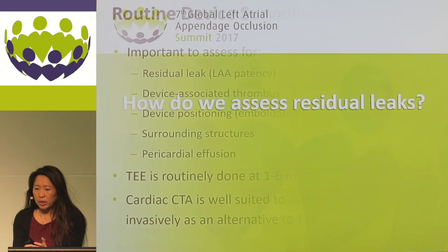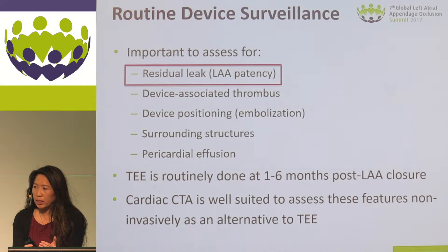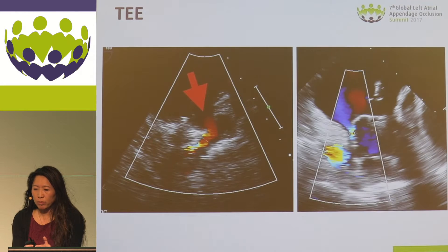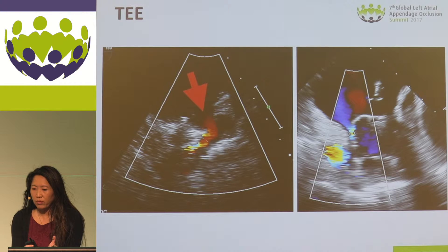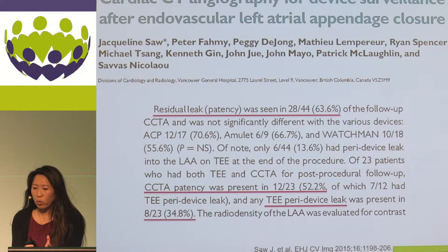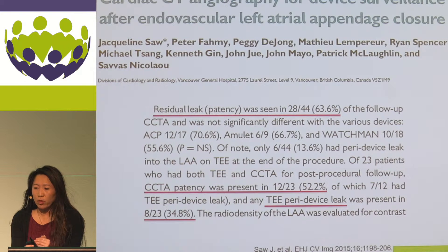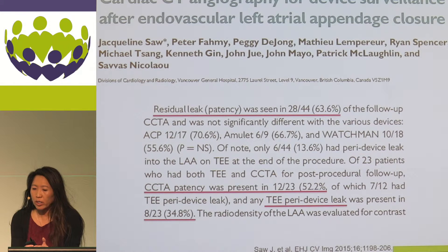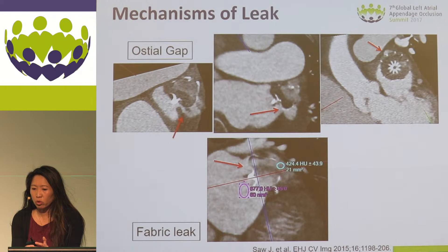So how do we assess residual leaks? Follow-up imaging for device surveillance is done with either TEE or CT at one to six months follow-up, and an assessment of residual LA patency is done on these imaging. TEE is the gold standard, utilizing color flow Doppler with the Nyquist limit set at less than 50. CT imaging is actually quite good to assess for peri-device leak, and in fact more sensitive. With various devices, we've seen peri-device leak in about 60% of cases where there's residual contrast opacification within the appendage after closure. CT is also useful to look at the mechanisms of these leaks.